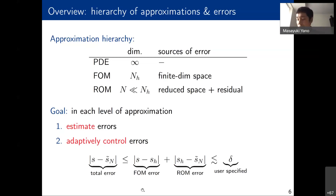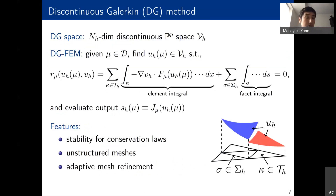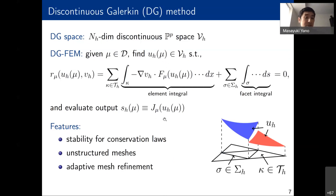As a first step, I focus on controlling the full-order model error using adaptive high-order methods — specifically the discontinuous Galerkin method. The DG method approximates the solution in an N_H-dimensional piecewise polynomial space, seeking a solution u_H satisfying the DG residual statement involving integration over elements and facets. DG methods have attractive features including stability for conservation laws, support for unstructured meshes for complex geometries, and easy adaptive mesh refinement, which plays a crucial role in controlling the full-order model error.